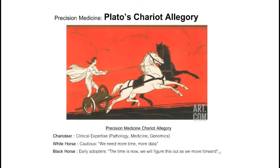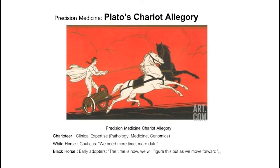Next-generation sequencing testing for oncology is really critical — it's the cornerstone of precision medicine. Without reliable, high-quality data, we're never really going to understand true associations between specific genetic changes and response to therapy. I liken this to Plato's chariot allegory — there are horses trying to drive us faster than we need to go, and others trying to hold us back. The charioteer in this case is really clinical expertise — a combined expertise between pathology, medicine, and genomics. All three contribute a unique skill set to this framework. If you're developing these tests, reach out for as much help as you can get, because it's very hard to do this as an individual entity.